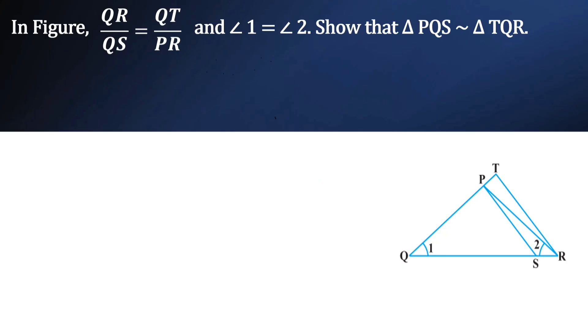In the figure, QR by QS is equal to QT by PR, and angle 1 is equal to angle 2. Show that triangle PQS is similar to triangle TQR.